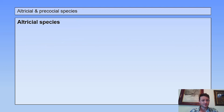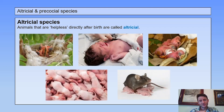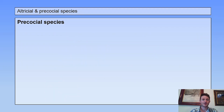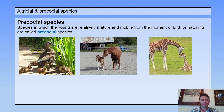Altricial species or animals are animals that are helpless directly after birth. So animals that need a lot of parental care are called altricial species or animals. On the other side you have precocial species — species in which the young are relatively mature and mobile from the moment of birth or hatching. These animals still need parental care but less than altricial animals.